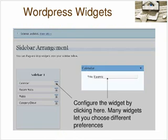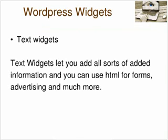In the calendar, I simply configure the widget by clicking on the little three bars next to calendar, and it opens up the box called calendar. Many of the widgets allow you to choose different preferences in these boxes. You can add the title of the widget, and quite often you can add some different preferences.